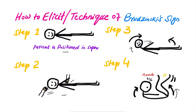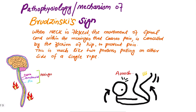In step four, a positive sign is involuntary flexing of the hips and knees — an involuntary reaction to lessen the stretch on inflamed meninges. The pathophysiology: when the neck is flexed, the movement of the spinal cord within the meninges causes pain, which is cancelled by flexion of the hips to prevent pain. This is much like two persons pulling on either side of a single rope.